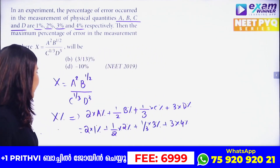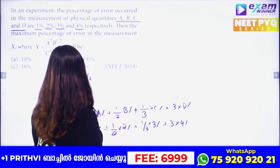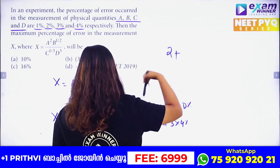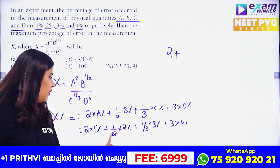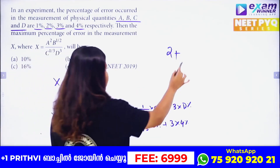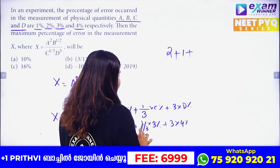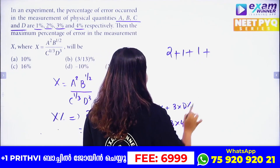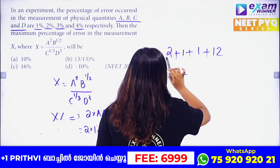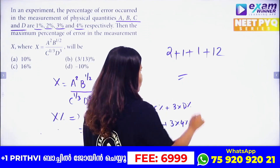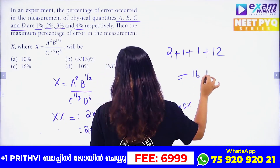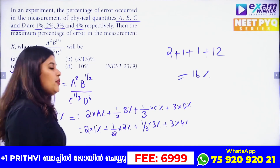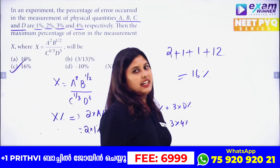Calculating: 2×1 = 2, plus ½×2 = 1, plus ⅓×3 = 1, plus 3×4 = 12. Total: 2 + 1 + 1 + 12 = 16 percent. Option C is the correct answer.